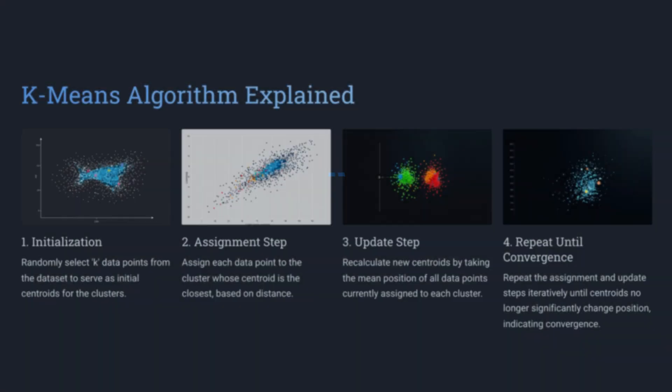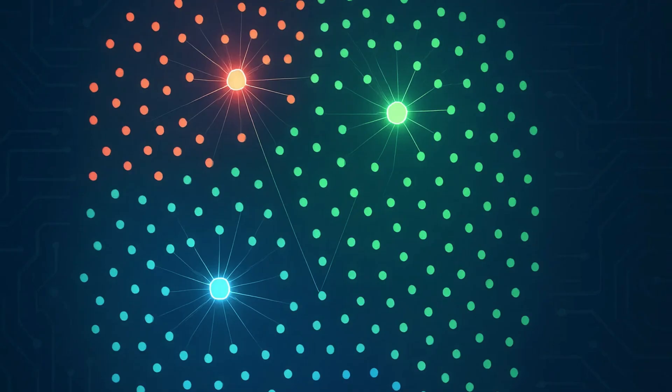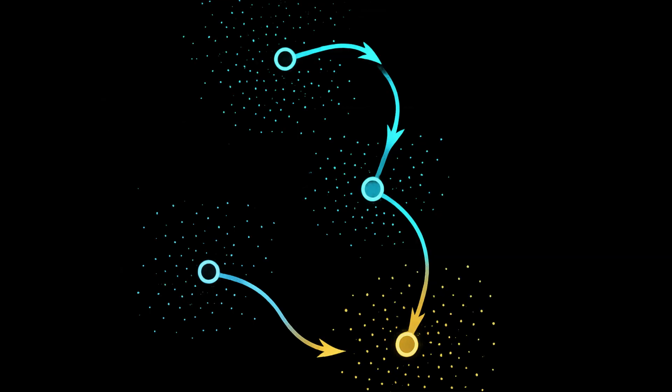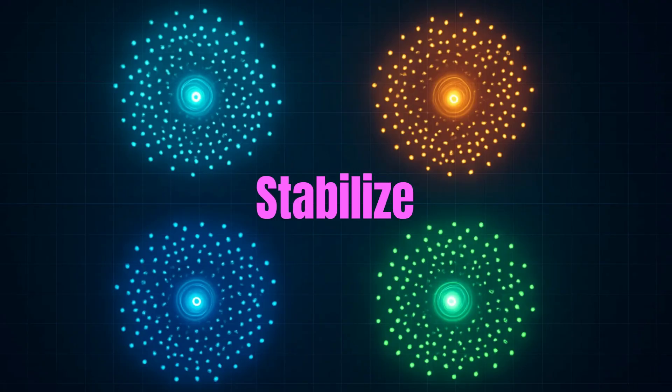K-means is a simple but powerful algorithm used to group similar data into clusters. The process starts by picking a number k, which tells us how many clusters we want. Then it randomly places k centroids — those are the centers of each cluster. Each data point gets assigned to the nearest centroid. After that, the algorithm recalculates where the centroids should be based on the points in each cluster, repeating until the centroids stop moving and the clusters stabilize.